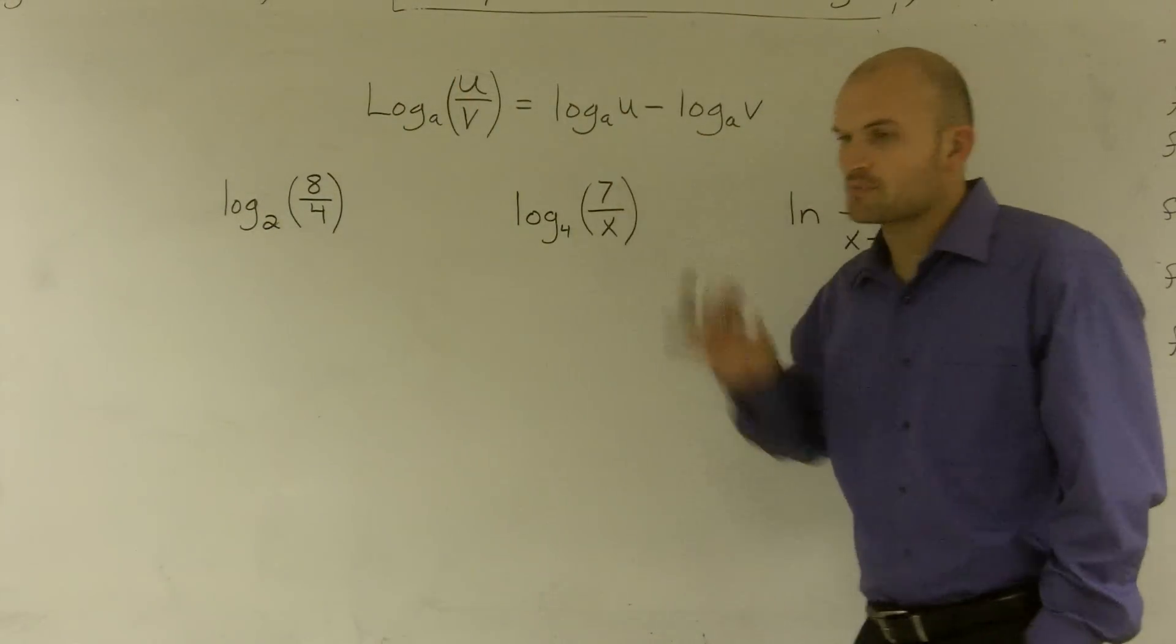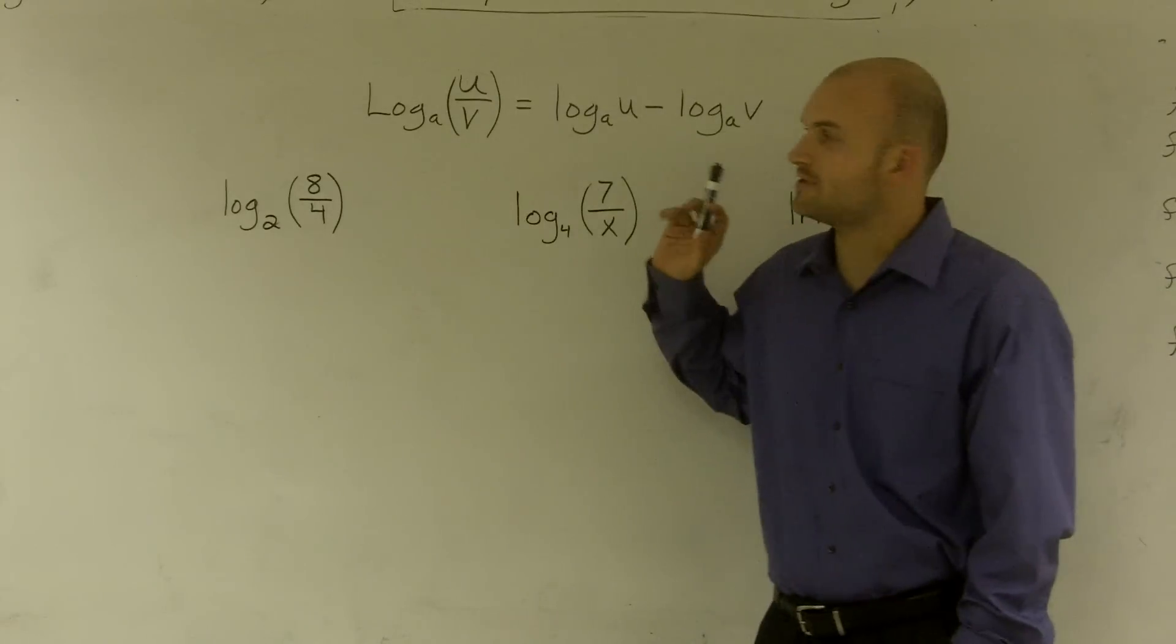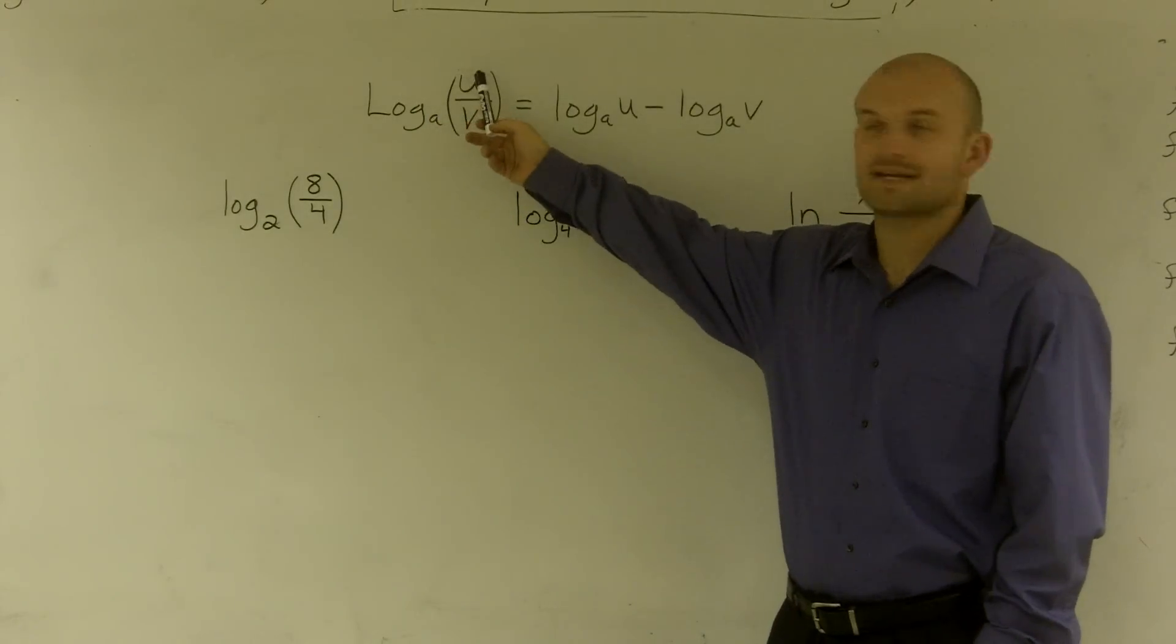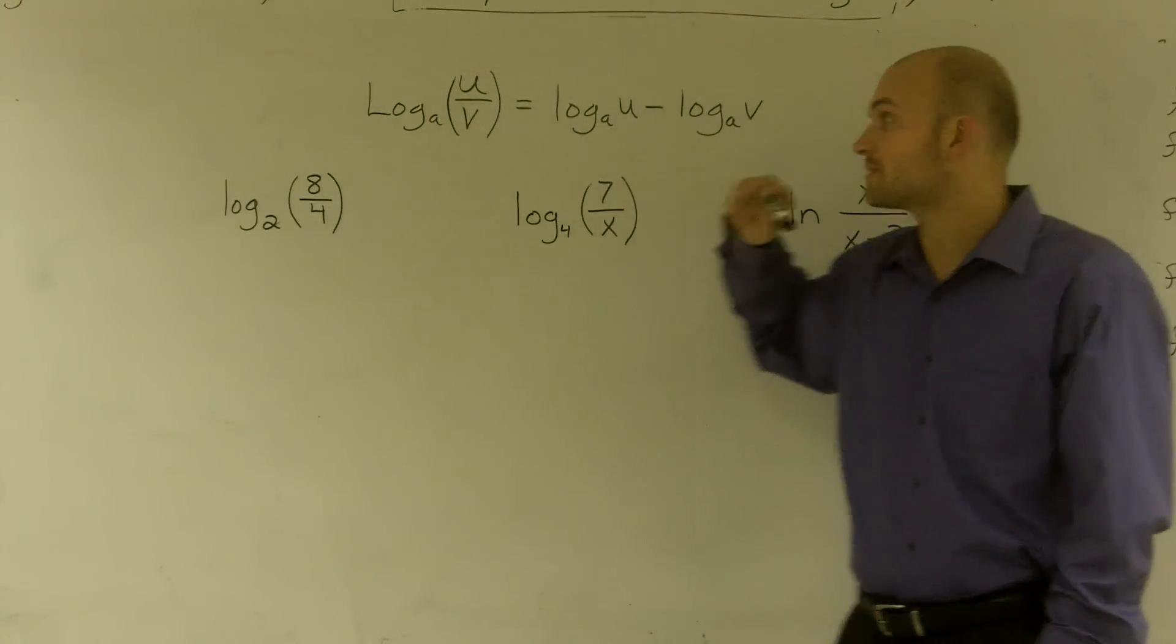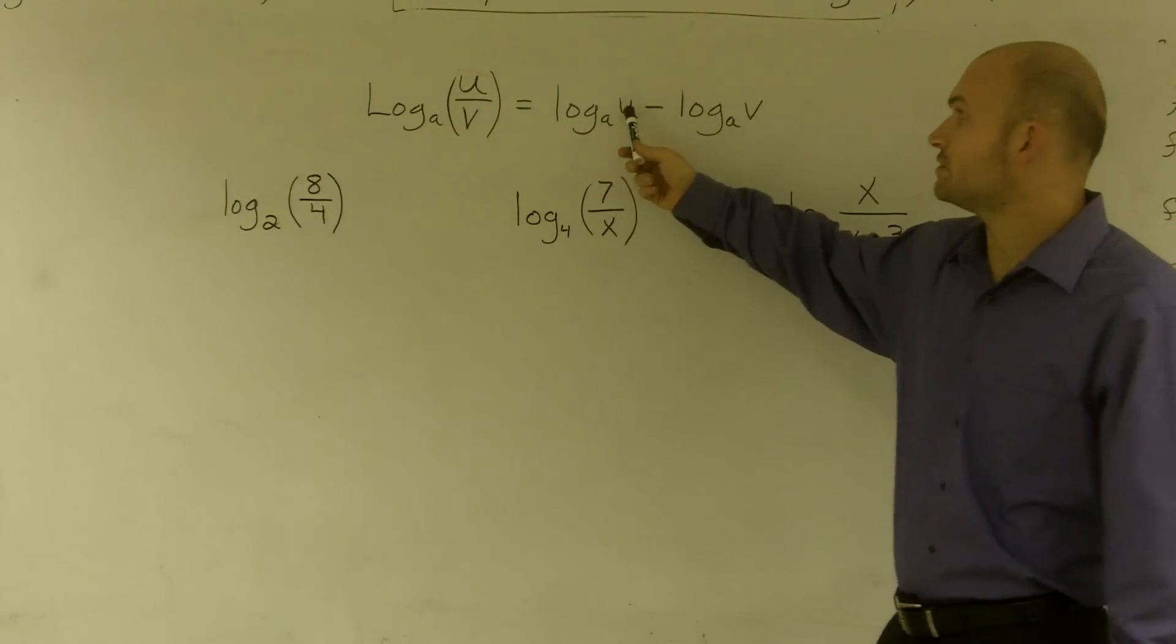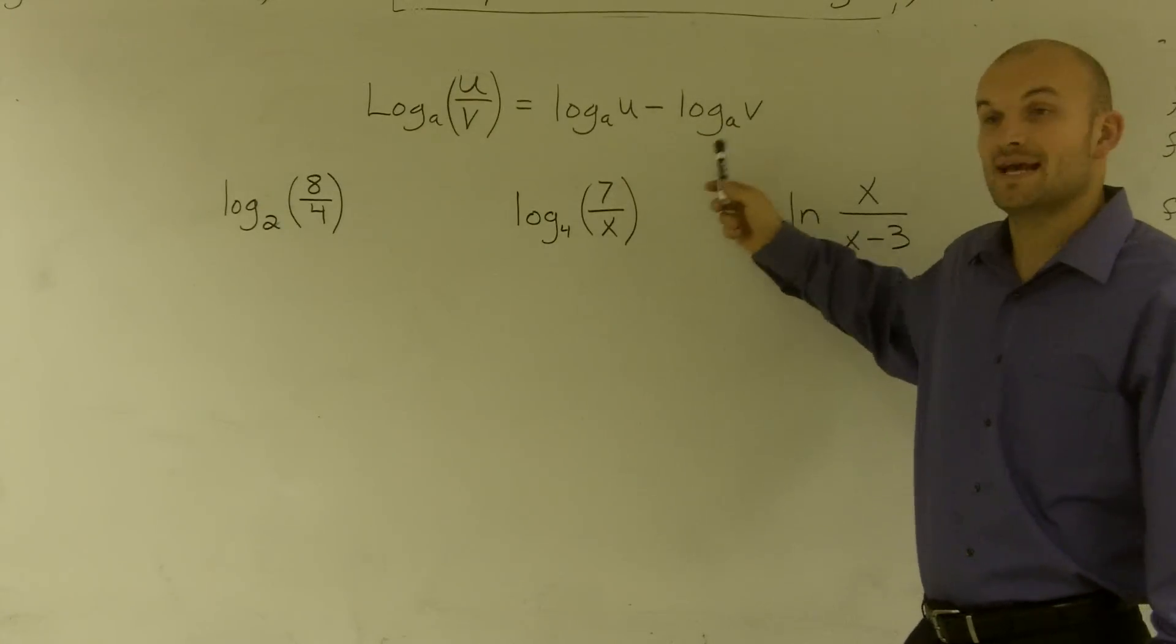So what this property states: when given a logarithm of base a, and you have inside your logarithms you're dividing two values, u and v, what you can do is separate those two values into log base a of u minus log base a of v.